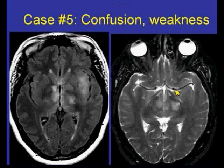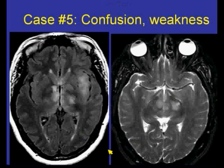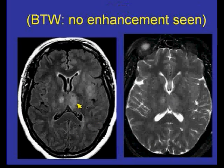A young individual who had confusion as well as weakness after a viral illness. You're seeing the FLAIR scan on the left and a T2-weighted scan on the right. Another example of the FLAIR scan and the T2-weighted scan in this individual — there was no enhancement seen on the post-gadolinium enhanced scans. Once again, this occurred after a viral illness.